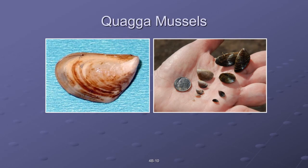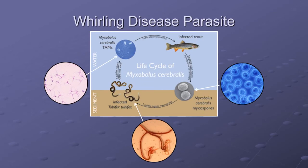Next up is the quagga mussel. Quagga mussels are hardier than zebra mussels — they thrive in locations zebra mussels cannot. They'll clog pipes and pump intakes, and they consume food that supports native species including salmon and steelhead. Then there's the whirling disease parasite. It usually causes neurological damage to young fish, causing the affected fish to whirl in a corkscrew pattern, which makes feeding difficult, makes them easy targets for predators, and they have a tendency to die.